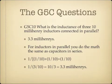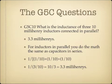What is the inductance of three 10 millihenry inductors connected in parallel? The answer is 3.3 millihenries. For inductors in parallel, you do the math the same as capacitors in series: 1 over L-total equals 1/10 plus 1/10 plus 1/10. Breaking that down, you get 1 over 3/10, which equals 10 over 3, which is 3.3 millihenries. Because all the inductance values are in the same unit of measure, you don't need to convert to henries to solve this.